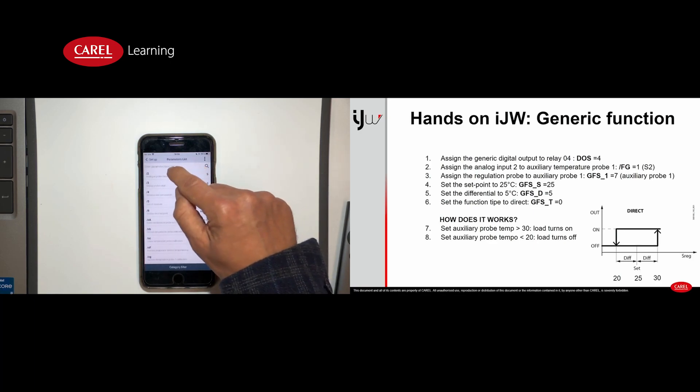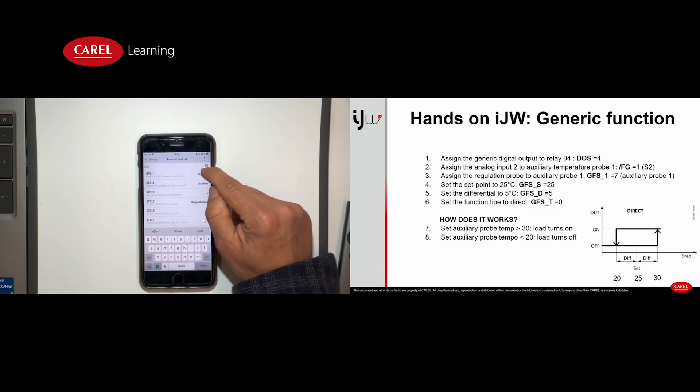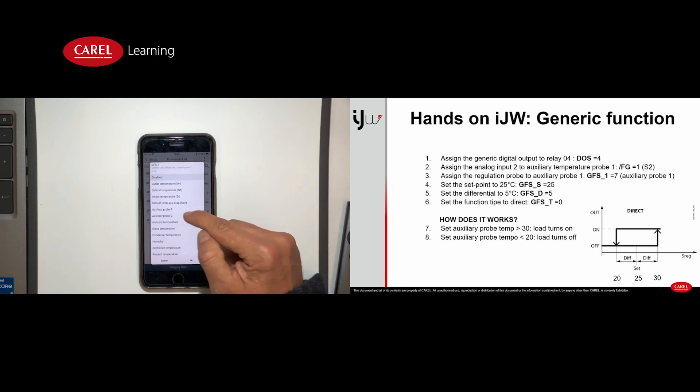Okay, so the first parameter is GFS1 and this parameter is the one that, with this parameter we decide which is the probe that is used for the regulation of the generic function. In this case an auxiliary probe.